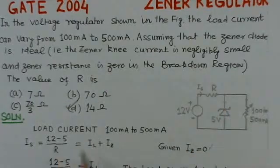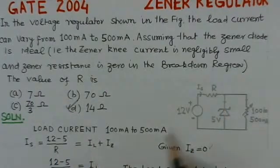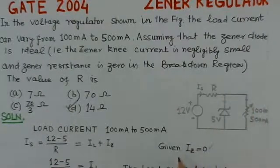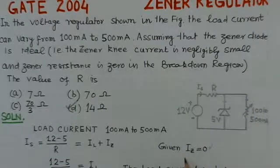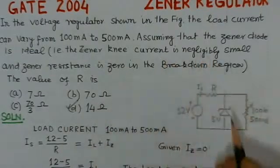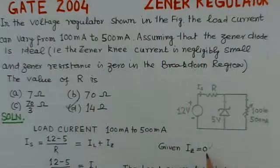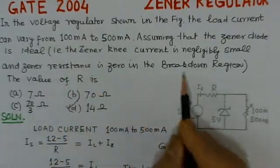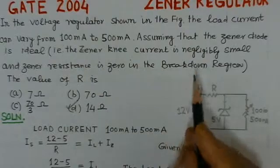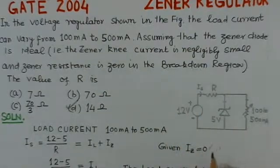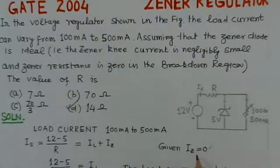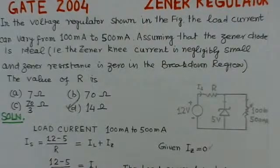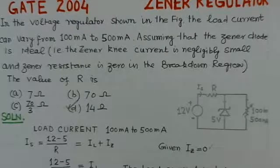We can see the value for IS will be given by (12-5)/R, and this current IS will flow through the Zener as well as through the load resistance. But here in this problem, the value for Zener knee current is taken to be zero, so IZ = 0. Also, the series resistance to the Zener is also taken to be zero. So with IZ being zero, this equation reduces to (12-5)/R = IL.